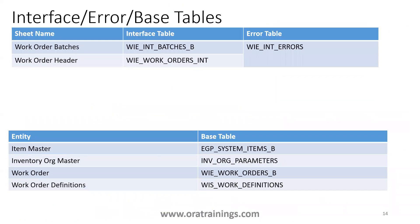Now, coming to the table details. The first one is Work Order Batches — the table name is WI_INT_BATCHES_B. The next one is Work Order Header — WI_WORK_ORDERS_INT. The error table for both of them is WI_INT_ERRORS. You can segregate errors by interface table based on the table name information in the int errors table, which also has an error message column and an error code column — it's a single table with all error information for your import.